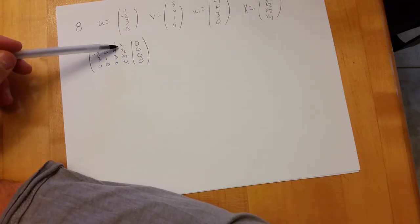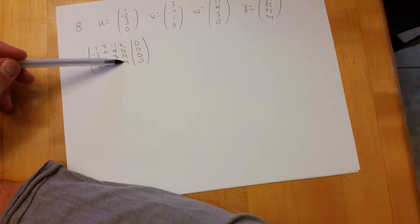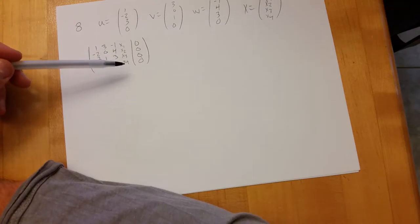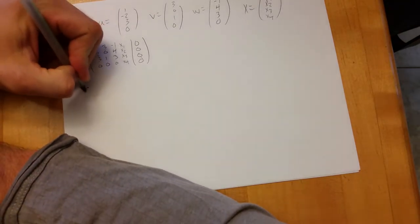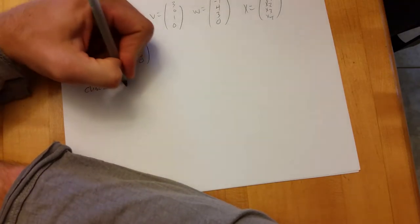So the easiest vector I can think of is zero zero zero one. And it's that simple to answer that question.